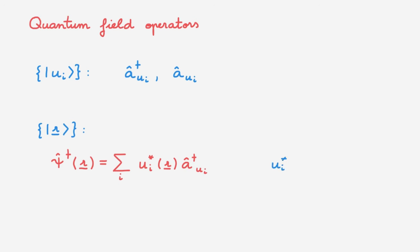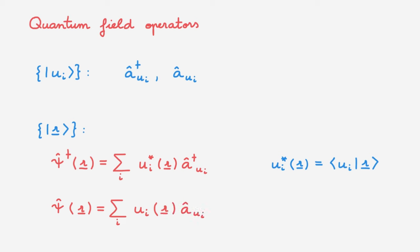The expansion coefficients are the complex conjugates of the wave functions associated with the basis states. Similarly, the annihilation field operator is psi of r, and we can also write it in terms of the annihilation operators in the u basis. The expansion coefficients are the wave functions associated with the basis states. Just like the creation operator in the u basis creates a particle in state u_i, the creation field operator creates a particle at position r. And just like the annihilation operator in the u basis removes a particle in state u_i, the annihilation field operator removes a particle at position r.